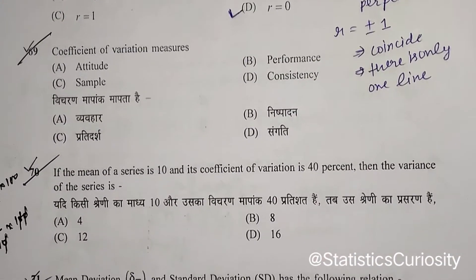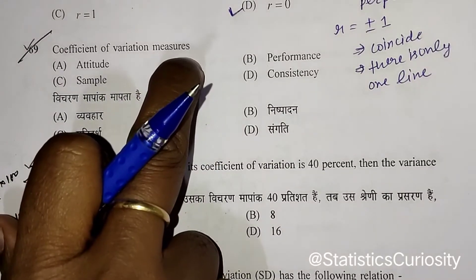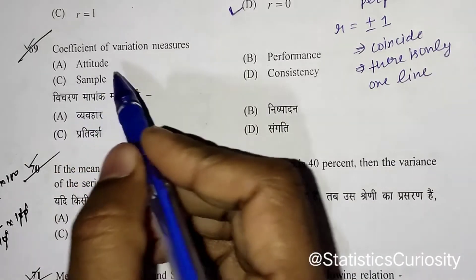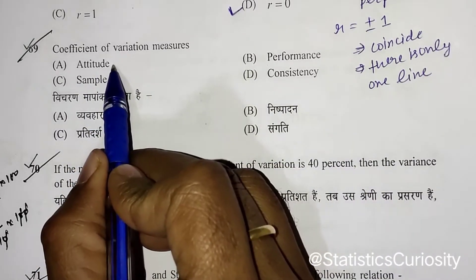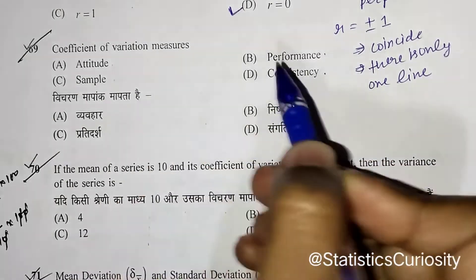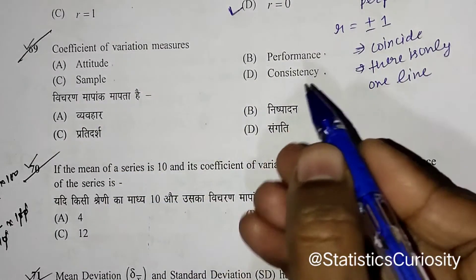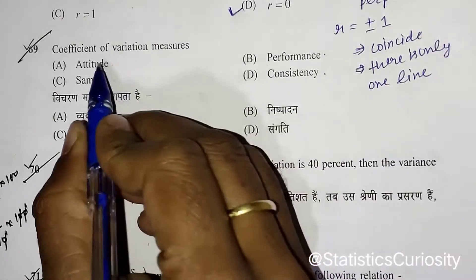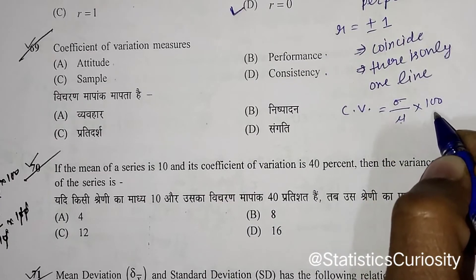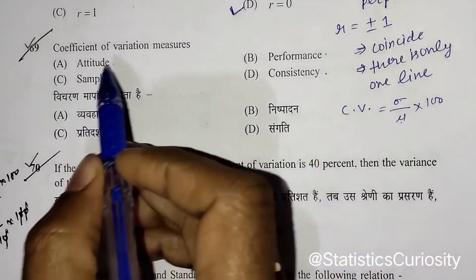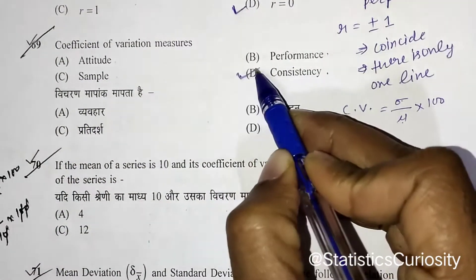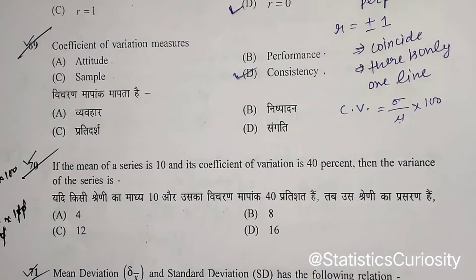Next question: the coefficient of variation measures — options are attitude, sample performance, and consistency. The coefficient of variation is (standard deviation / mean) × 100. By this definition, the coefficient of variation measures consistency. The correct answer is consistency.